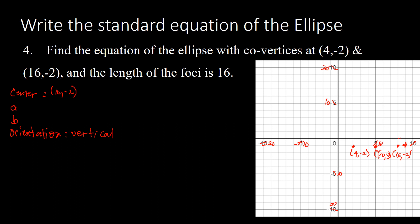Since we have the co-vertices, we can find b: counting from the center (10, -2) to a co-vertex is 6 units, so b = 6. We don't have the vertices, but we're given the length of the foci is 16, which means the full focal distance is 16, so c = 16/2 = 8.